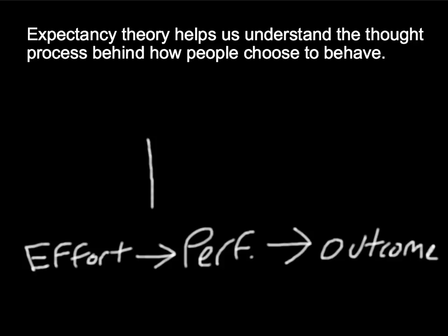The first one occurs right here, and this is called the effort, or E, to performance, or P, expectancy. And this is an individual's perception that his or her effort will result in a particular level of performance. You can think of it as a probability from 0 to 1. So, if I try really hard, am I actually going to reach this goal? Maybe in an academic course, if I study really hard, am I going to actually do well on that test? That's the E to P expectancy.